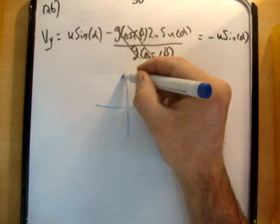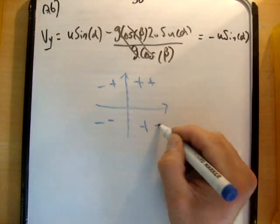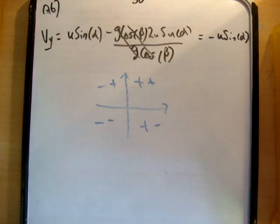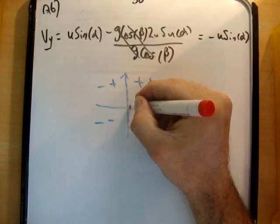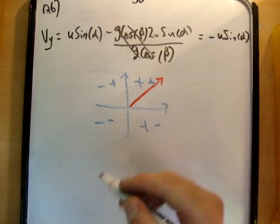If we look at our quadrants, defining plus in these directions here like that. This is plus plus, minus plus, minus minus, plus minus. So our initial velocity vector was in this quadrant here. And we had plus v sub x, or u sub x plus u sub y. However, of course, if the particle has done this sort of motion, it's coming down.